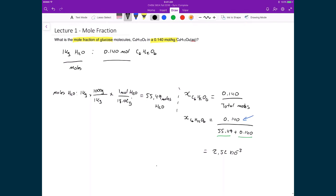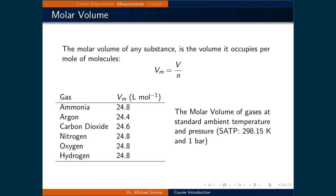The final quantification of a given substance we will cover, utilizing its amount in moles, is the molar volume. This is the volume a substance occupies per mole of molecules. The table on the bottom left shows a list of gases with their molar volumes at standard ambient temperature and pressure, being 298.15 degrees Kelvin and 1 bar. Notice that many of them are 24.8 liters per mole, with a couple of exceptions.